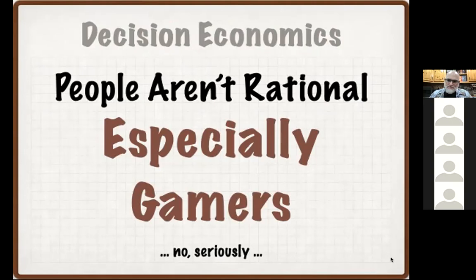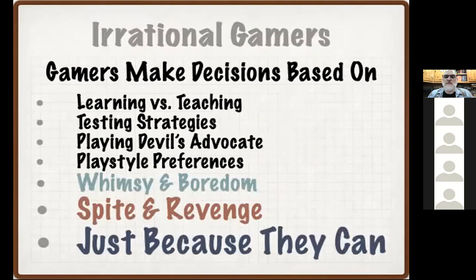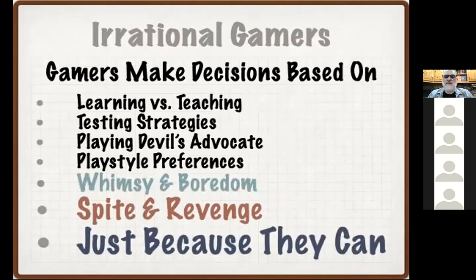Whether it's a video game, board game, or role-playing game, most of you can probably draw on experience and think of examples where players have made decisions based on a completely different set of guidelines than you would. The first one completely makes sense: if I'm teaching a game to somebody for the first time, I'm going to be playing very differently — not in my best strategic self-interest in order for me to win. I might be showing you options that don't earn me a lot of points, but I want to make sure you understand the game fully so that you're making informed decisions.